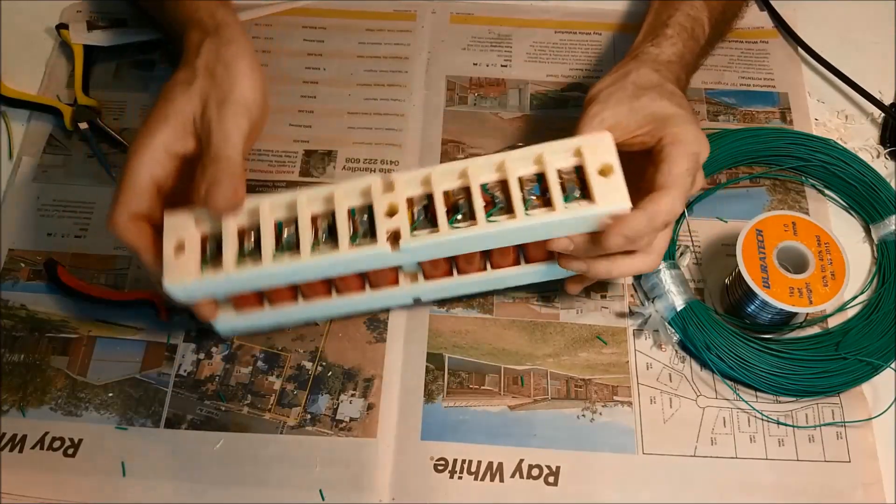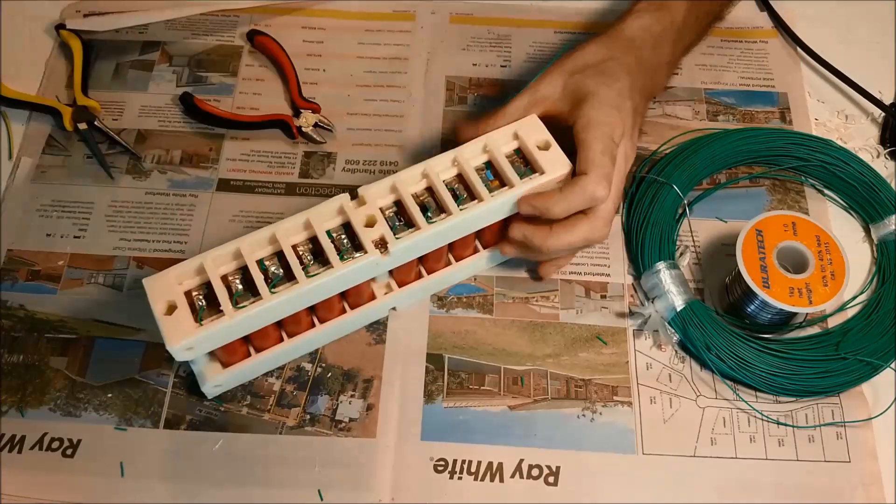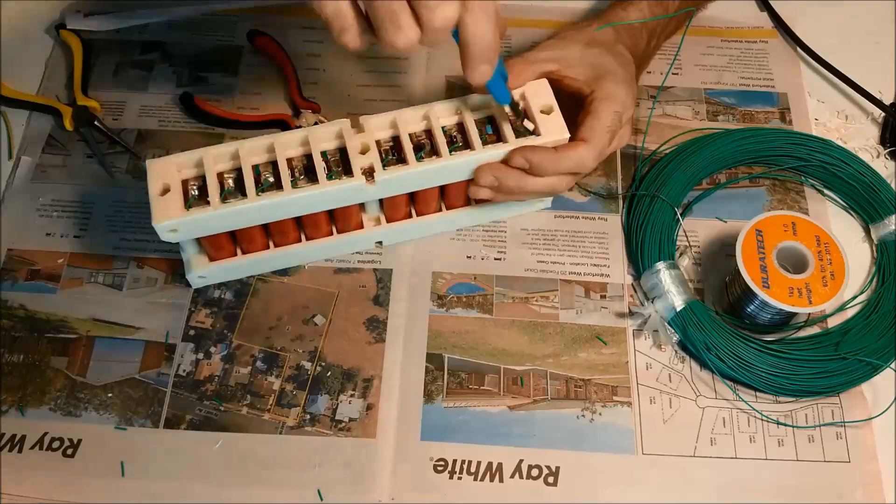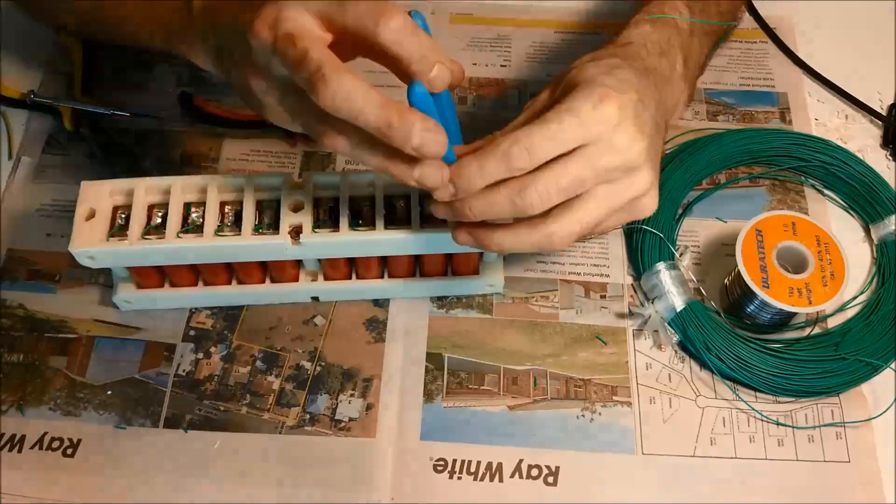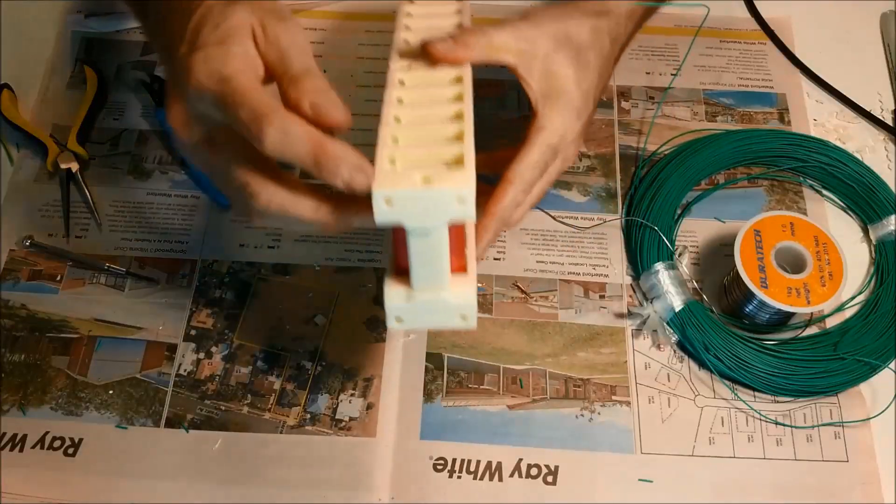Just repeat the other 9. So that's complete. And now an important step is to actually just cut off the excess at the ends. You'll need a fairly fine pair of side cutters. So that's one side done.